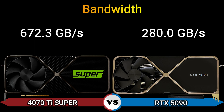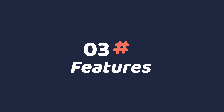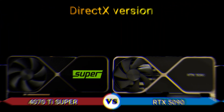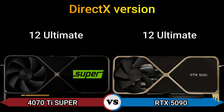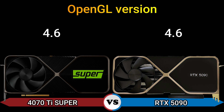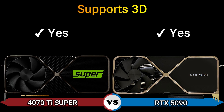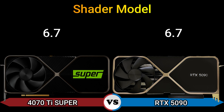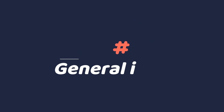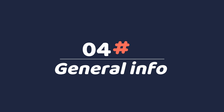Bandwidth: 672.3 GB/s and 1280.0 GB/s. Features: DirectX version 12 Ultimate, OpenGL version 4.6 and 3.0. Vulkan 1.3 support, 3D: yes, shader model 6.7.